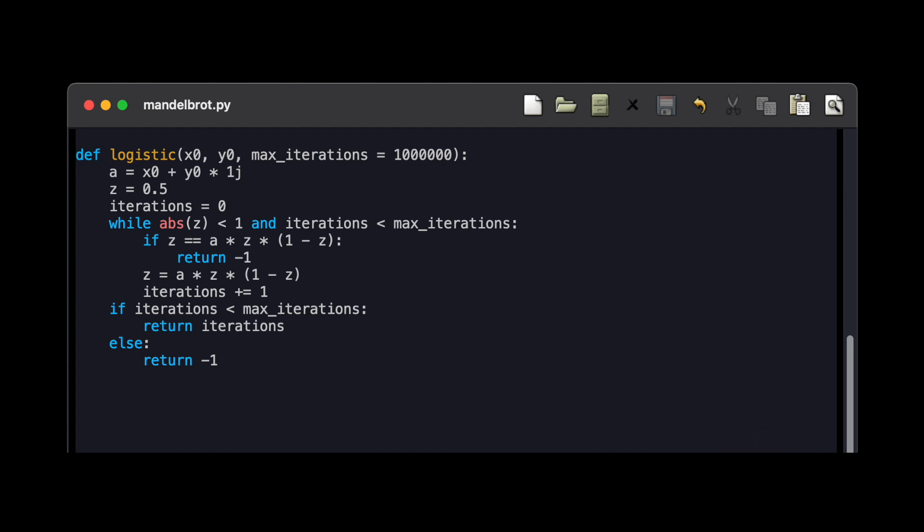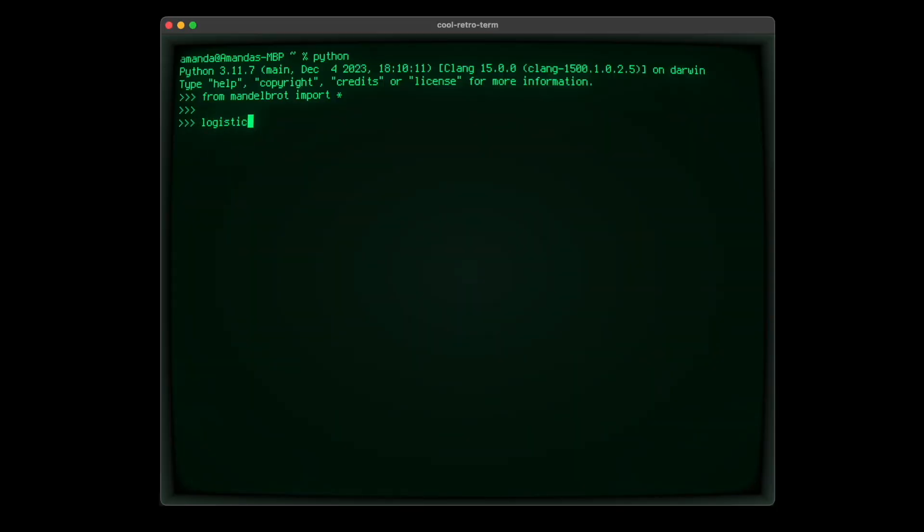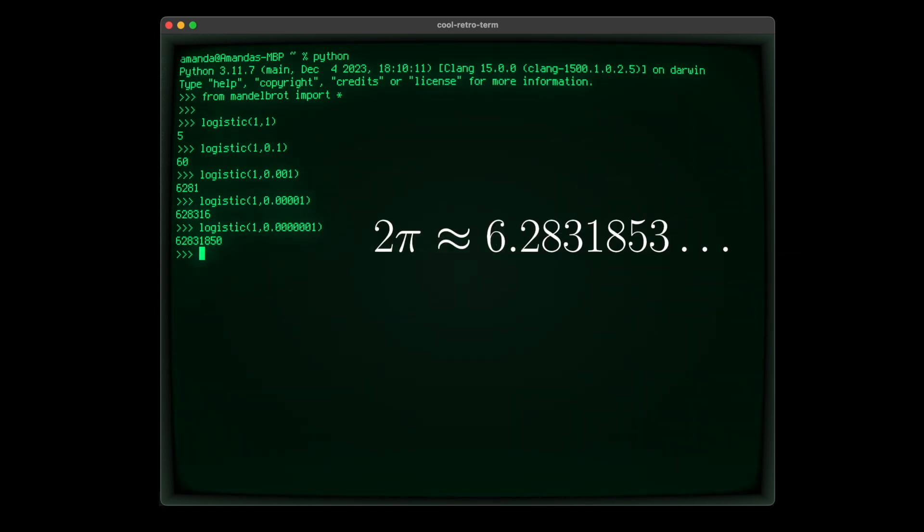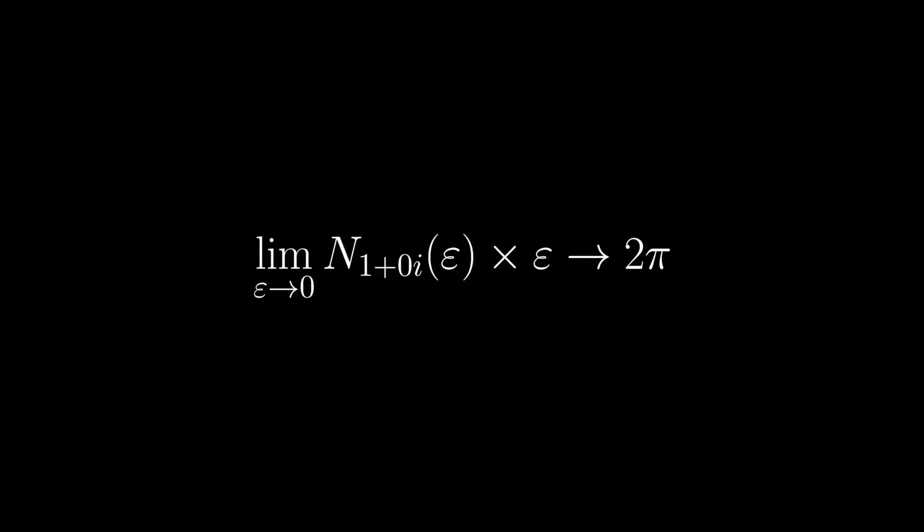We can write another program that computes the iterations for the logistic map. If we start at 1 and plug in smaller and smaller values of the imaginary argument, we get a number of iterations that is closer and closer to the digits of 2 times pi. So for the logistic map, we can say that the number of iterations for 1 plus i times epsilon multiplied by epsilon is 2 pi.